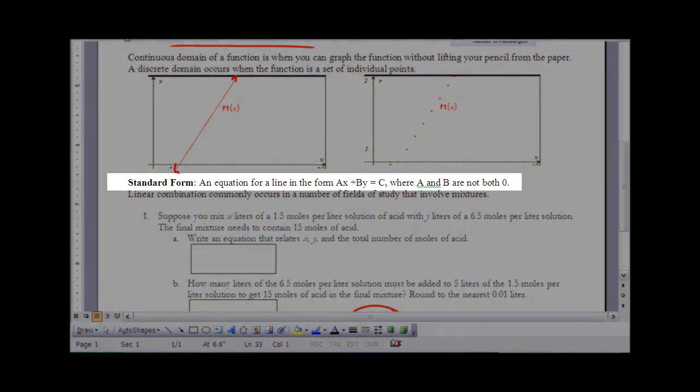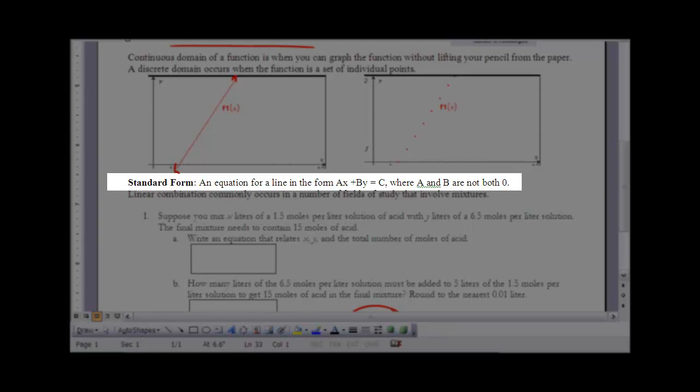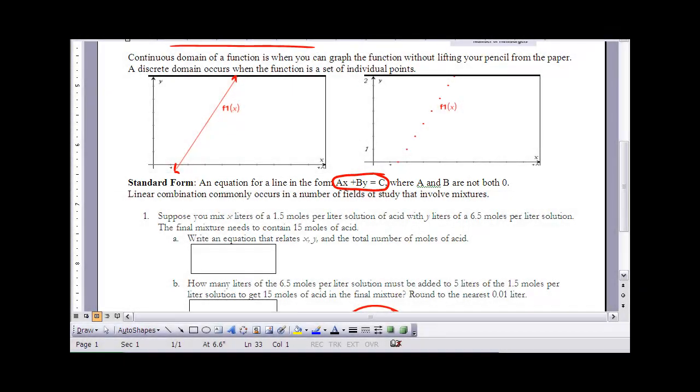The other thing I want to talk about here is the idea of standard form for an equation of a line, and that's Ax plus By equals C. So we've talked about Y equals Mx plus B form, and it turns out that this whole idea of using linear combinations leads to what we call standard form for a line. And in this case, A and B are not both zero, so we can't have both of them be zero. One of them could be zero, but not both of them.